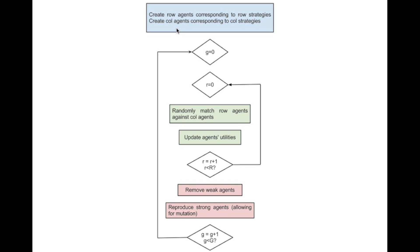Here's the basic algorithm — there's a great book that I'll put in the description of this video that explains this. You create your agents: row agents and column agents, so your games don't have to be of the same size and you can have different strategies for your row and column players. For every generation, you play a certain number of rounds, meaning we randomly match a row agent against a column agent and update the utilities, which are dictated by the strategies corresponding to the row and column agents. Each row and column agent corresponds to a row and column strategy, so you basically play a round of these tournaments.